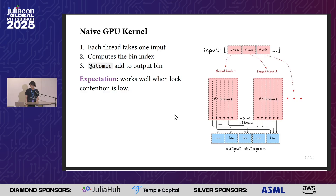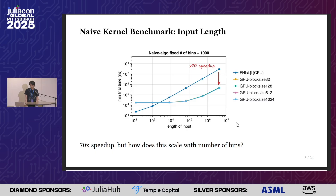You already probably have the expectation that this works well only when lock contention is low. Looking at performance as the number of inputs scales, we see that asymptotically it's about 70 times faster than one core — that's not too bad.